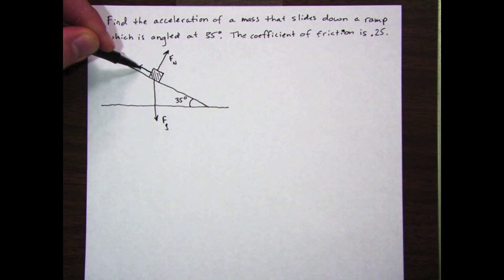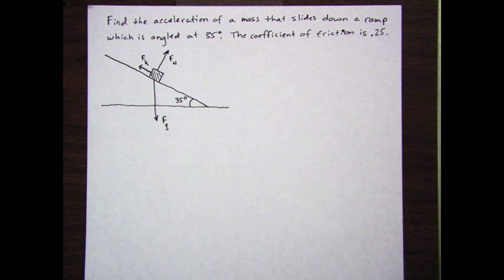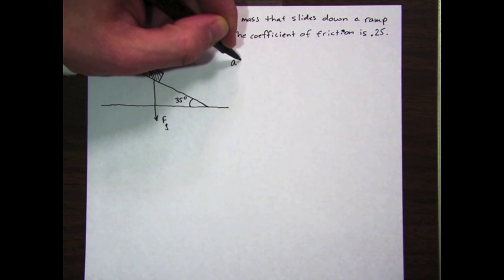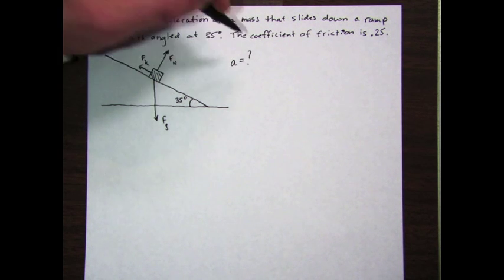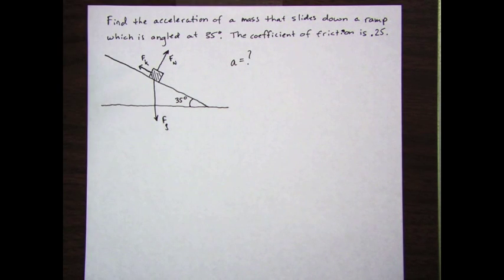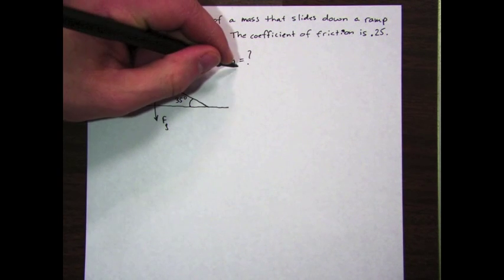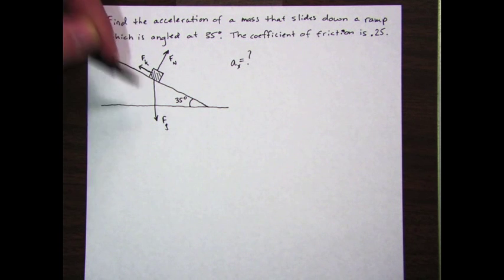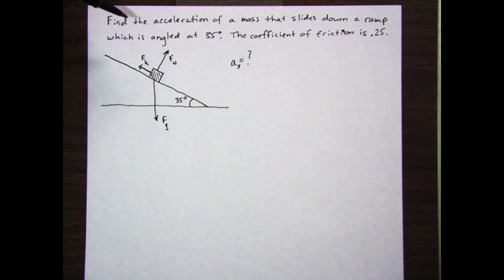In addition, the problem tells me a couple other things and asks me one thing. It asks me to find the acceleration, and I'm going to actually be finding the acceleration in the x direction or down the incline. I know that the acceleration in the y direction here is zero because it's not sinking into the ramp and it's not popping off.